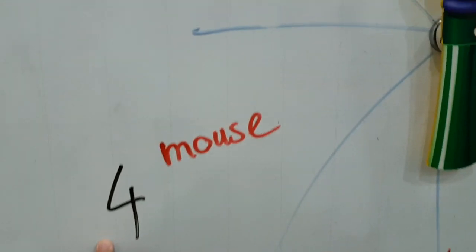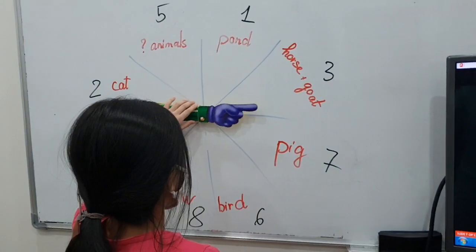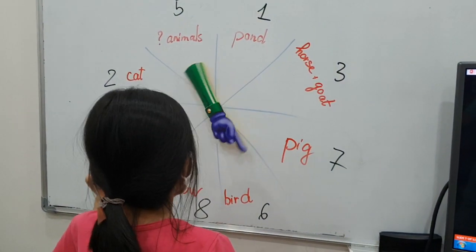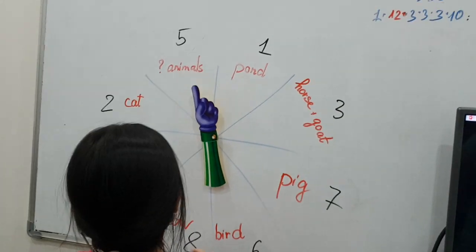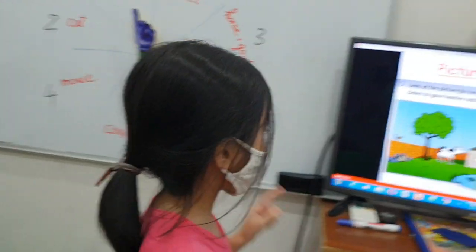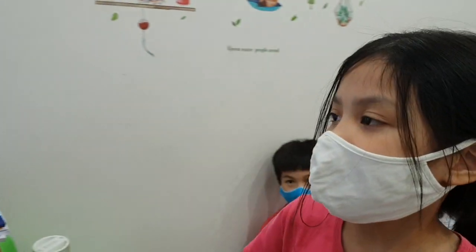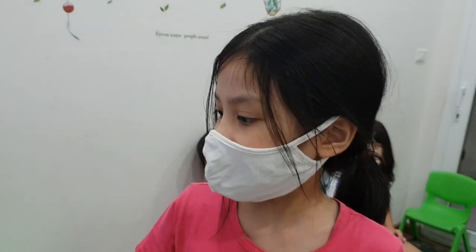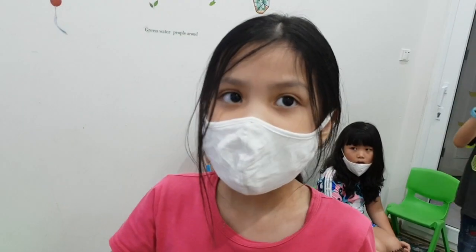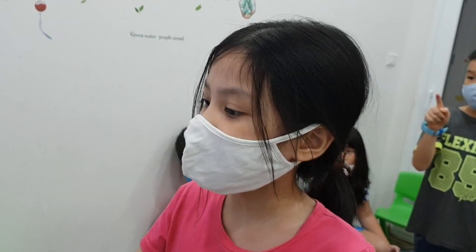Okay, so you got nine points. One, two, three. Animals. How many animals are there in the picture? Ten. There are ten animals in the picture. There are ten animals in the picture. Ten animals.